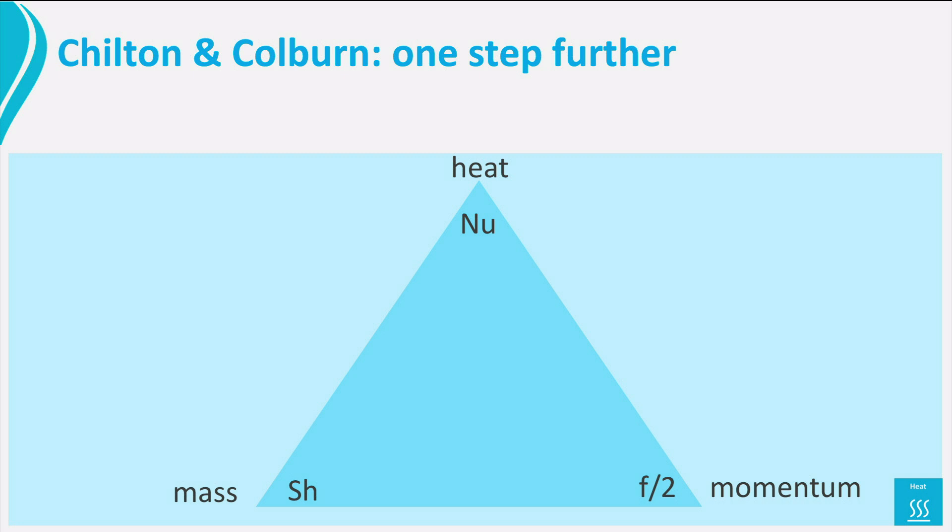Chilton and Colburn realized that for turbulent flows, the Nusselt and Sherwood relations for similar geometries are actually the same if they are first divided by Prandtl to the power one third and Schmidt to the power one third. Then they realize that if they also divide them by Reynolds, the relations for Nusselt, Sherwood and Fanning's friction factor become identical functions of Reynolds only.